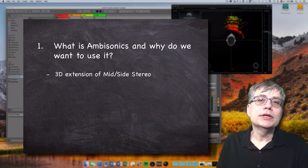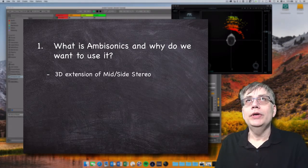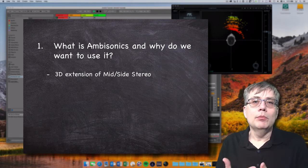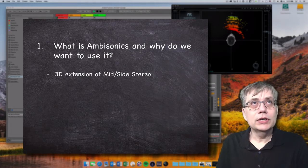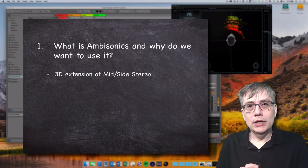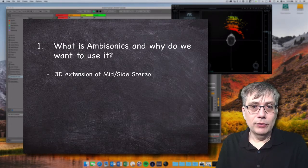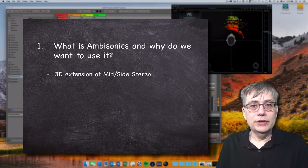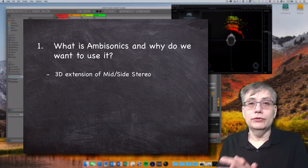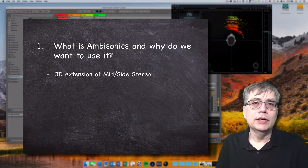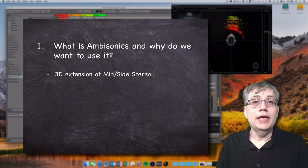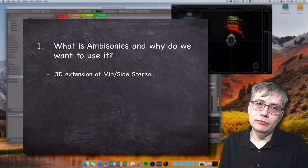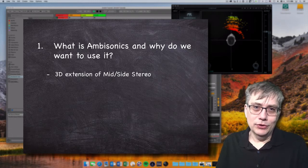In its simplest form, we can think of ambisonics as an extension of the mid-side stereo processing paradigm. If you're familiar with audio production, you are most likely familiar with the idea of mid-side processing. You take a stereo signal, which has left and right information, and convert it into a signal that contains the ambient information — the so-called mid channel — and the side information, which is the information on the sides of the stereo spectrum.